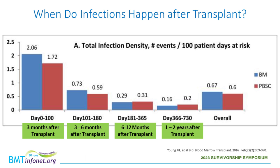When do infections happen after transplantation? Is it that once I'm transplanted, I'm always at risk? We are all at risk of infection, but certainly the risk for transplant recipients is higher. However, the risk is not the same throughout time — infections are most common early on after the transplant, and this risk decreases over time. This graph shows the number of infections in different time periods. The first two graphs on the left correspond to the time from cell infusion until three months after transplantation, or day 100 — a period of significantly higher risk, regardless of transplant type.